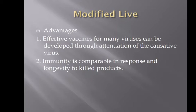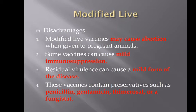Some advantages: effective vaccines for many viruses can be developed through the attenuation of that causative virus. Immunity is comparable in response and longevity to the killed product. Some disadvantages: modified live vaccines can cause abortion when given to pregnant animals, and can cause some mild immunosuppression. Residual virulence can cause a mild form of the disease, and the vaccines can contain preservatives such as penicillin, gentamycin, thimerosal, or a fungistat.